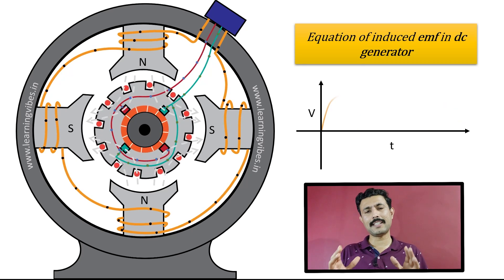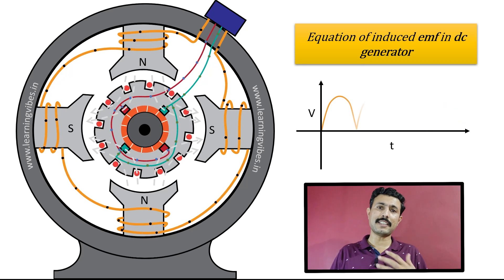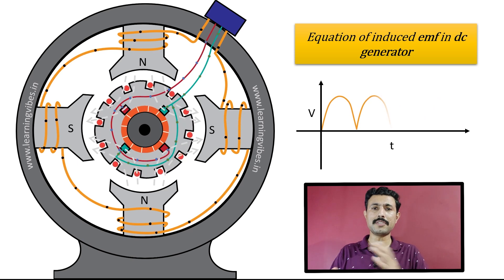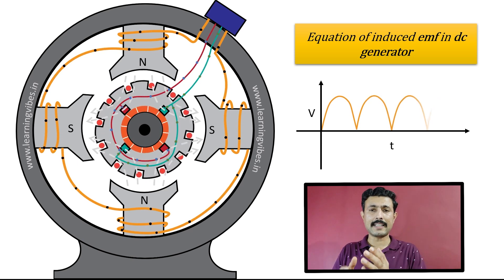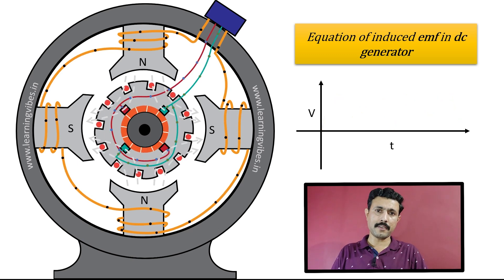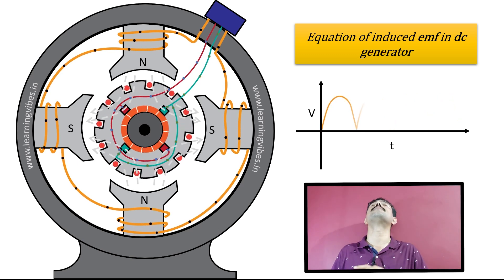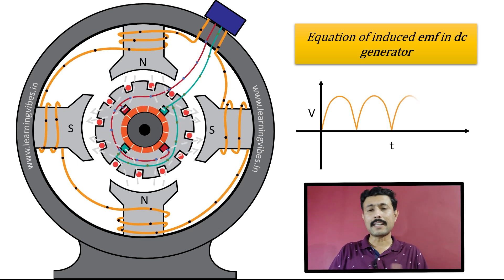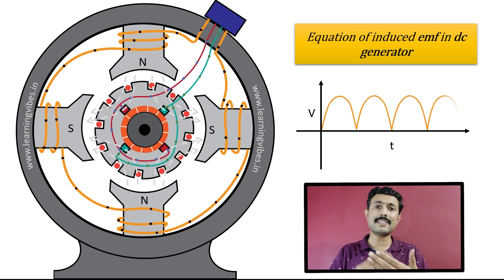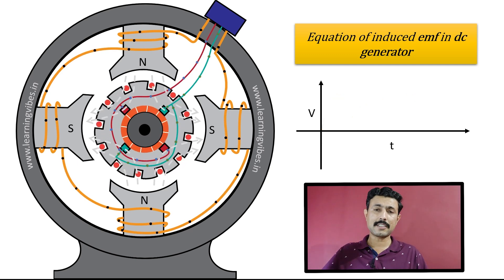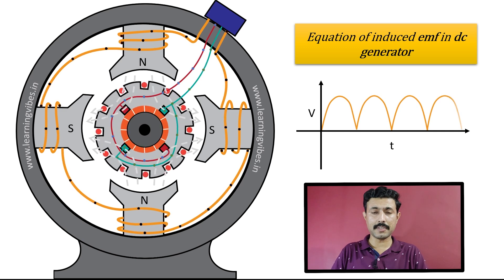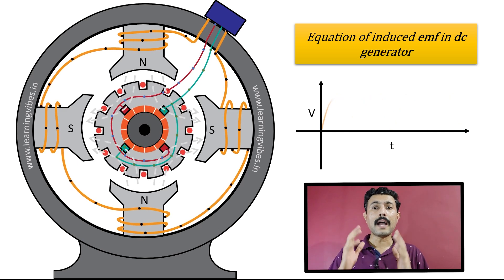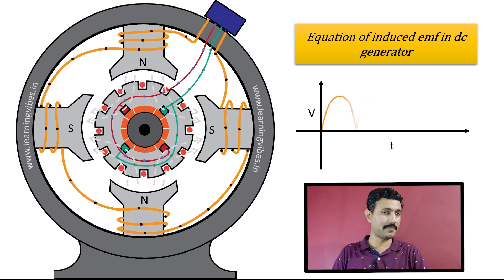When our DC generator is working, it induces some EMF and that EMF we are getting at the terminal point. The waveform of that induced EMF is like this. Sometimes things come into your mind: how can I calculate the induced EMF? What is the equation through which I can calculate the amount of induced EMF? Using this animation we are going to understand how we can derive the equation of induced EMF.